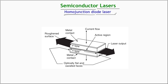Semiconductor lasers are very popular because of their size and efficiency. They are one of the most efficient lasers, about 0.1 millimeters in length with efficiency close to 40%. Modulation of light intensity can be done easily by modulating the applied bias to the laser diode, which is one important factor that makes these lasers very useful in communication engineering.